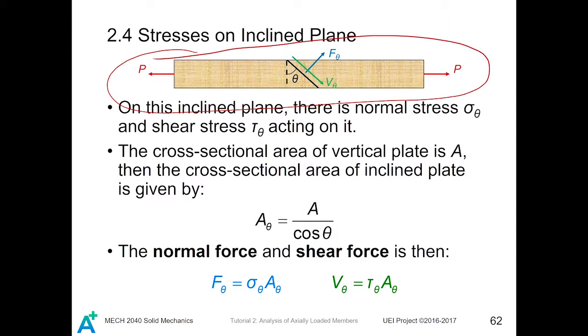For this bar, we cut this bar through this line—it is an inclined plane. On this inclined plane, there is an inclined shear force V theta and an inclined direct force F theta. Also, on this inclined plane, there is normal stress sigma theta and a shear stress tau theta acting on it.